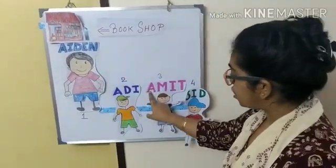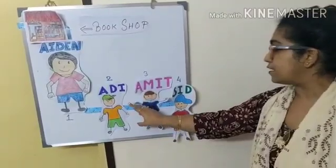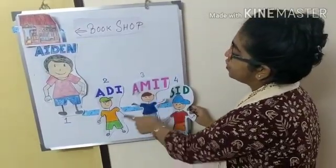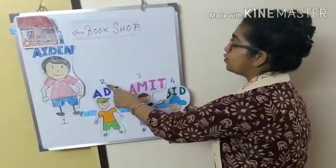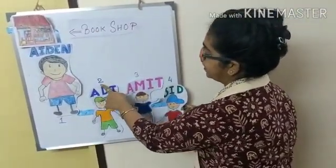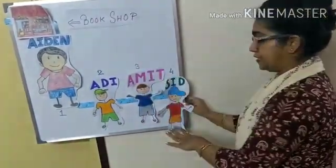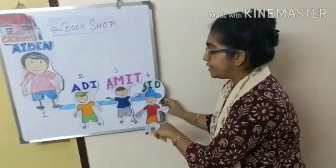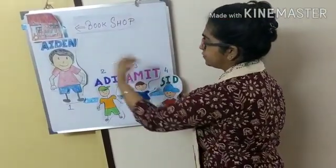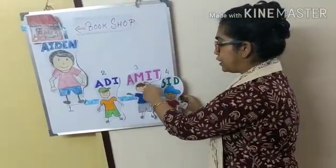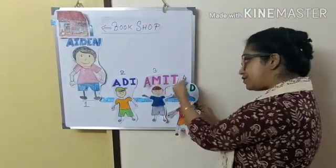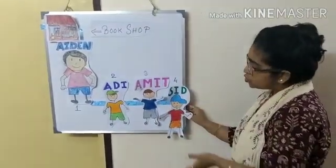Similarly, you can ask your child who is before Amit, and the child will answer Adi is before Amit, because two comes before three. We start counting from the left side to the right side. You can also ask the child who is after Amit, and the child knows to count one, two, three, four, so the child will say Sid will come after Amit, because after three comes four.